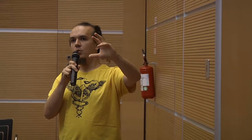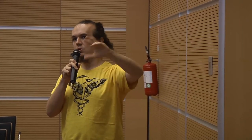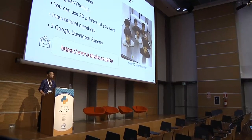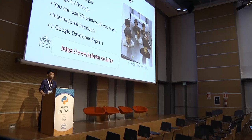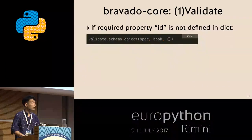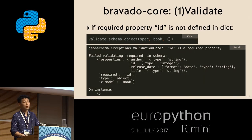A follow-up question asked whether OpenAPI supports defining the format of error response messages — for example, documenting the JSON structure of a validation error such as 'this field is required'. The answer is yes — error response schemas are documented in the OpenAPI spec.